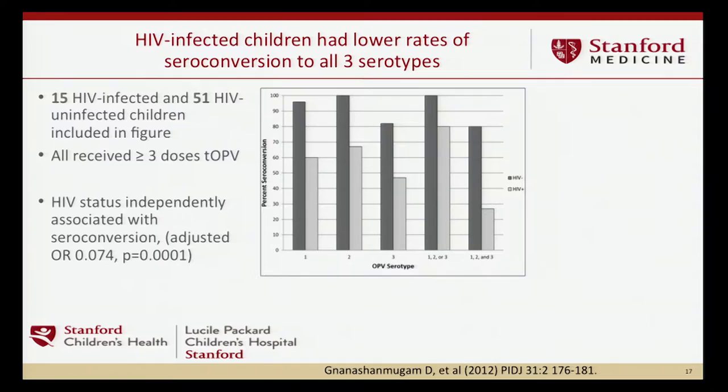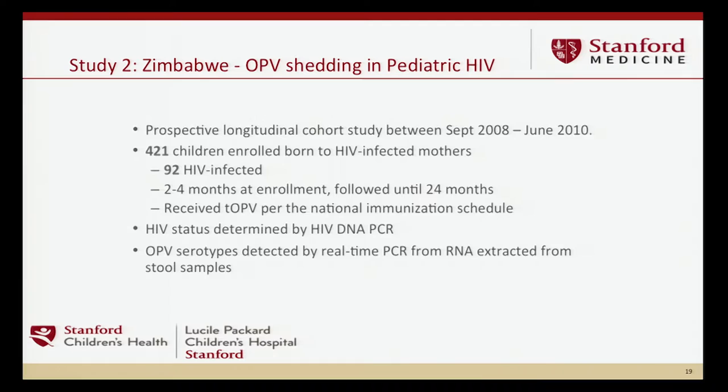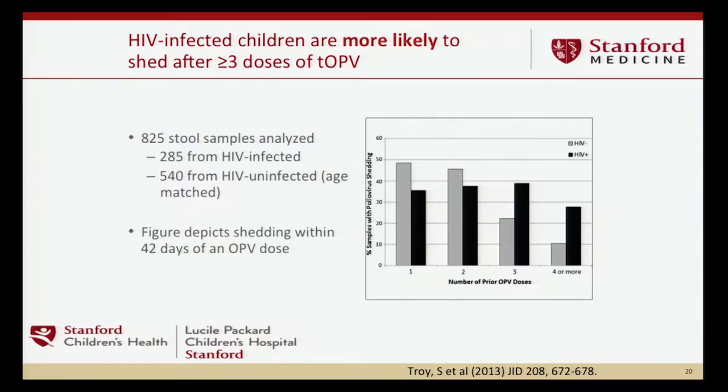We thought these B-cell dysfunctions could be equivalent to congenital B-cell immunodeficiencies and potential sources of transmission. We looked at antibody production after doses of OPV depending on HIV status. HIV-uninfected children are shown in dark, HIV-infected in lighter bars. At all levels of doses, HIV-infected children are significantly less likely to seroconvert to the live vaccine virus. In addition, children who do seroconvert have much lower geometric mean titers. These were children who were not treated with ART—this was before the ART era. The second study looked at OPV shedding in this population.